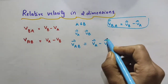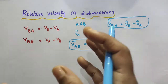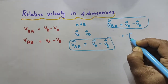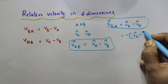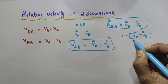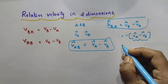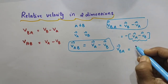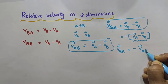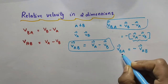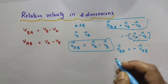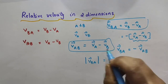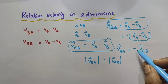We got the expressions for the relative velocities in vector form. Now, vector VBA can be written by taking minus outside as minus of vector VA minus vector VB, which is minus of vector VAB. So the velocity of object B relative to object A is equal to minus of the velocity of object A relative to object B. If we take the magnitude of these two, the modulus of vector VBA will be equal to the modulus of vector VAB — their magnitudes will be the same, but directions will be different.